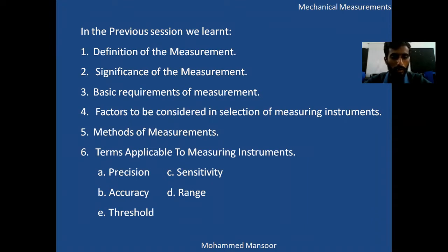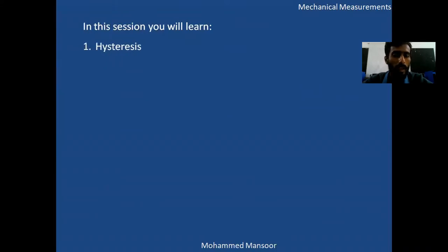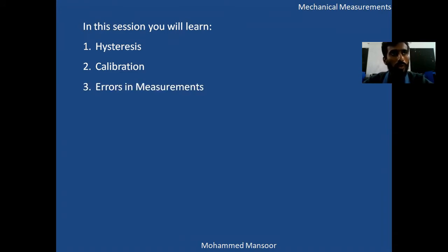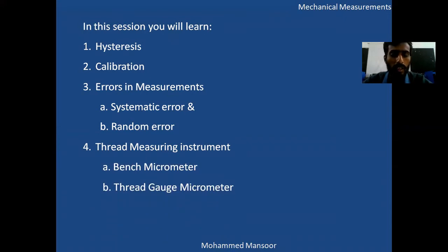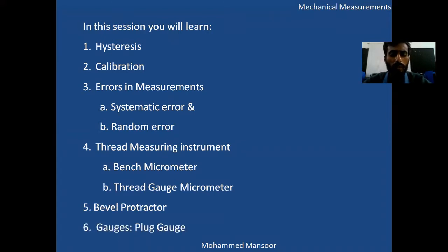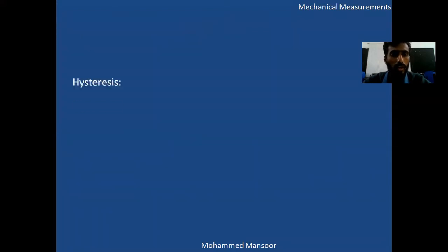In today's session we will study hysteresis, calibration — why we require calibration — and errors in measurements. We will cover both systematic errors and random errors. Then we'll study thread measuring instruments: the bench micrometer and the thread gauge micrometer. We'll also study the angle measuring instrument called the bevel protractor, and finally the plug gauge.